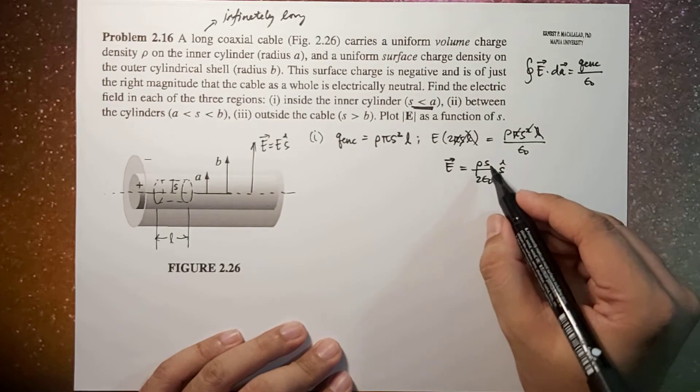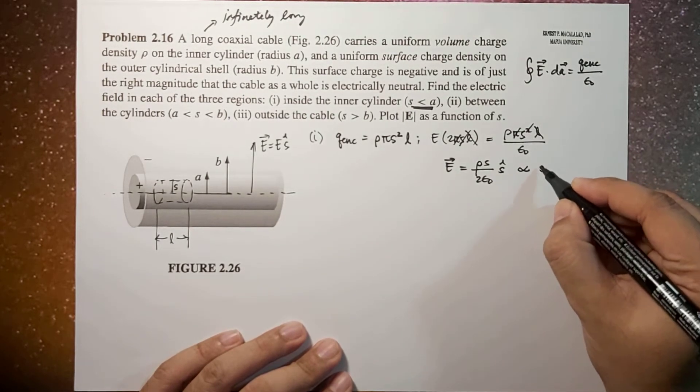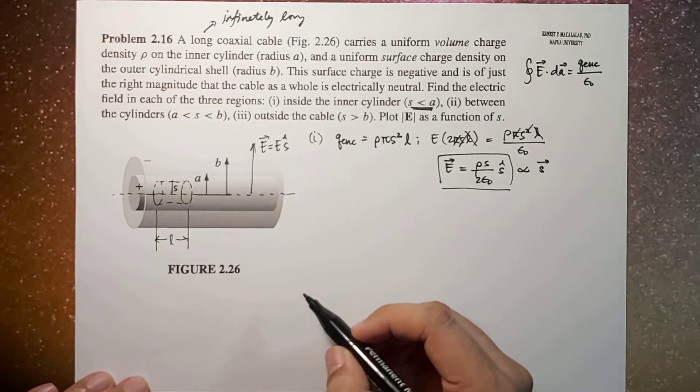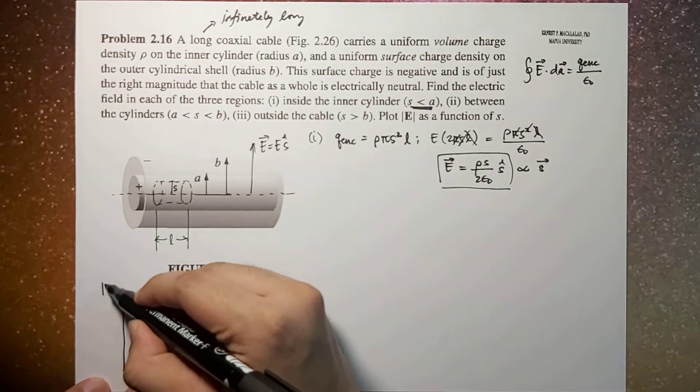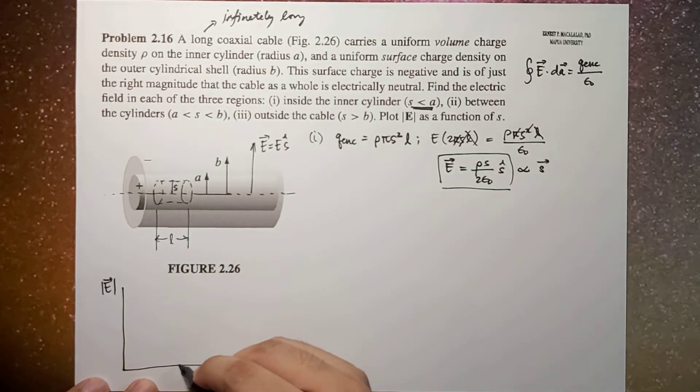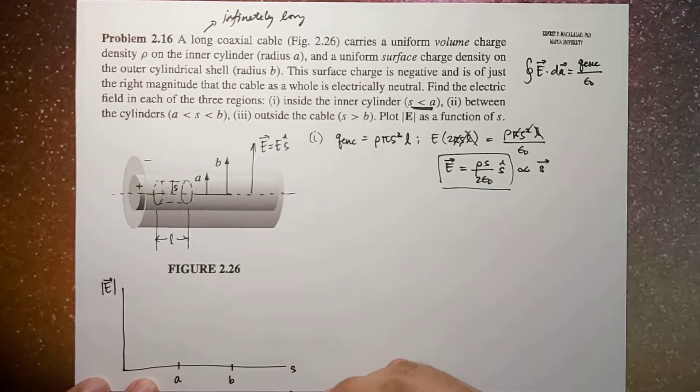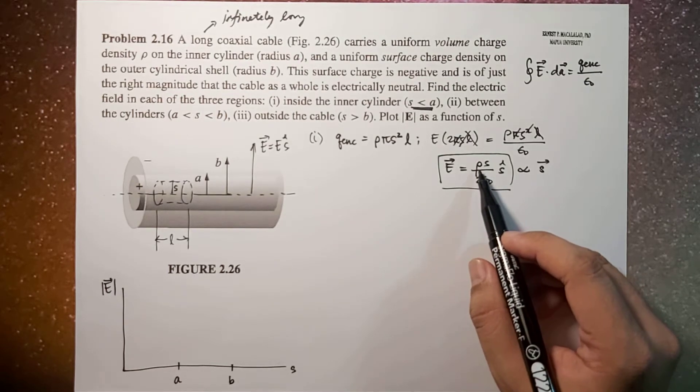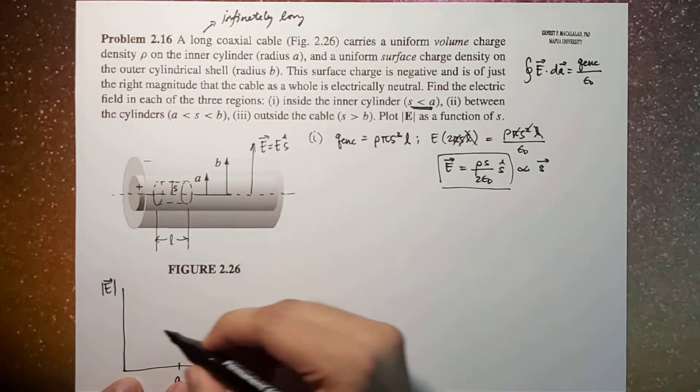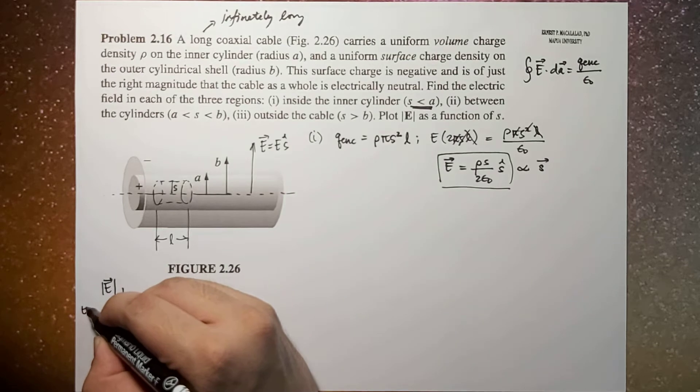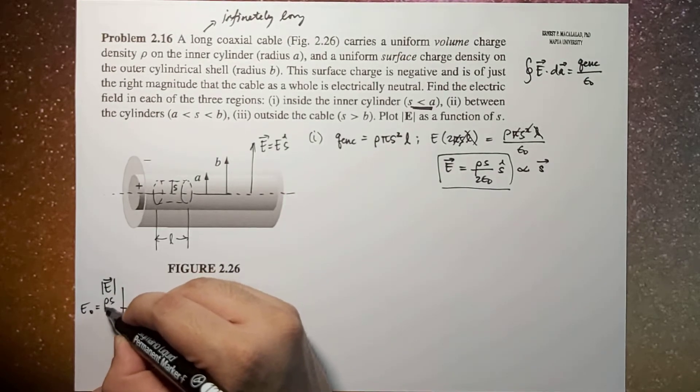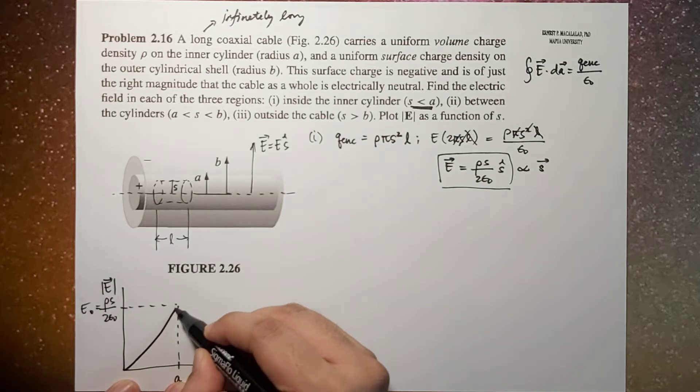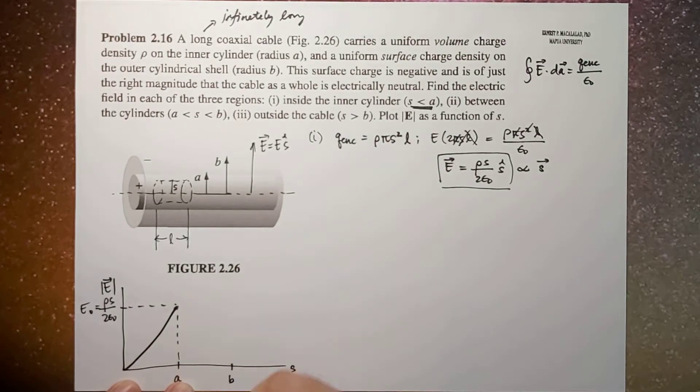So you will notice that the electric field varies with S vector. If you're going to plot this, this will be the electric field. Let's say this is A, this is S, and this is B. At S equal to A, the electric field is constant, equal to ρA over 2ε₀. Let's call that E₀, which is ρS over 2ε₀. And it varies linearly. This is linear.